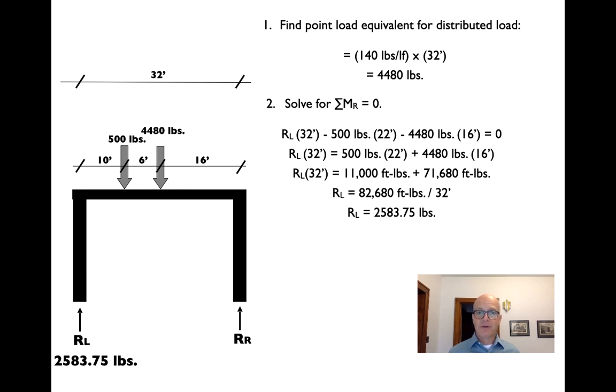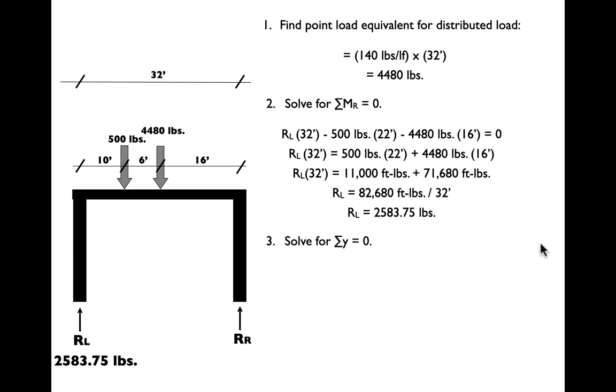Now we can solve for RR either using sum of the moments around the left reaction. We would take RL, or sorry, we would take 500 and the 4480, but now notice that the moment arms would go the other way, be 500 times 10, 4480 times 6, divide all that by 32. Or we could solve for the sum of y, the sum of the forces in the vertical direction. Note that all of the arrows are either going up or down. Sum of y is going to be a little bit simpler. We have only one that we don't know, so it's going to be relatively easy to solve.